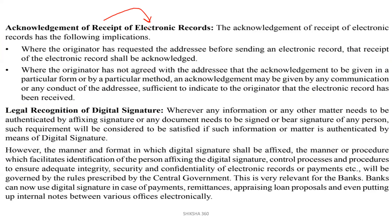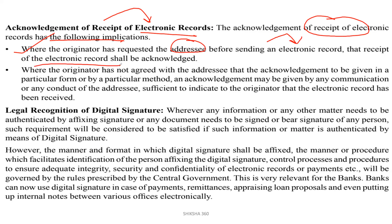Acknowledgement of receipt of electronic record. The acknowledgement of receipt of an electronic record has the following implications. Where the originator has requested the addressee before sending an electronic record that receipt of the electronic record must or shall be acknowledged. Where the originator has not agreed with the addressee that the acknowledgement be given in a particular form or by a particular method, an acknowledgement may be given by any communication.